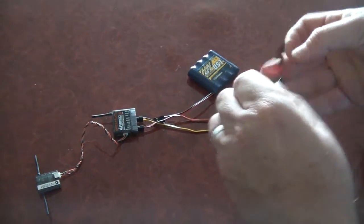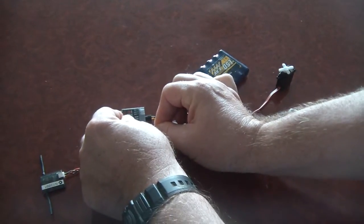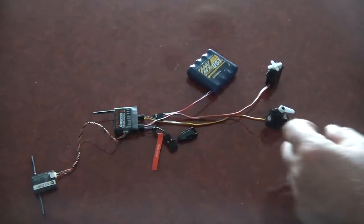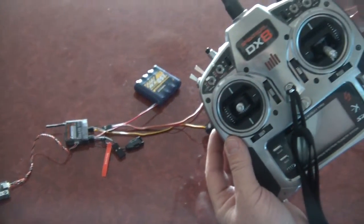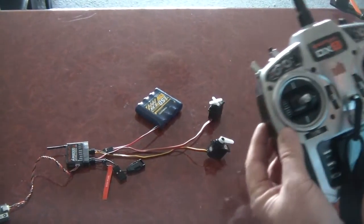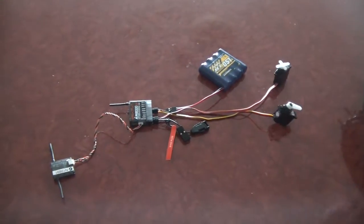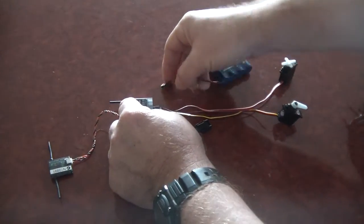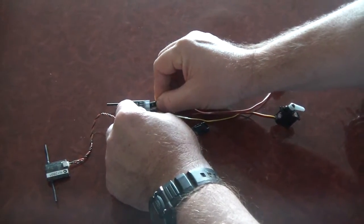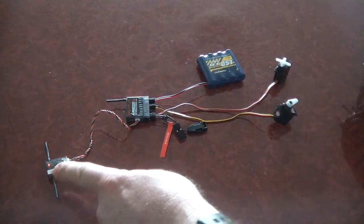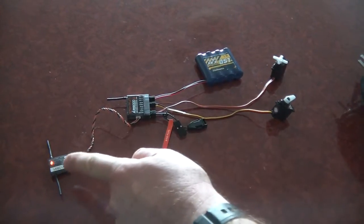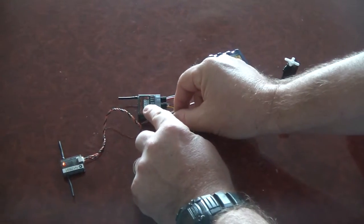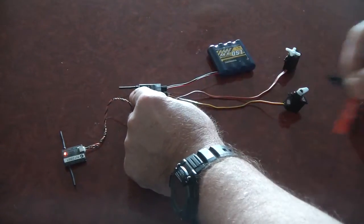Plug in the bind plug. This time I'm going to have the gear channel in the center position, so that'll be the failsafe position. Everything's off and the throttle is obviously at idle. We'll plug in the power. Okay, we've got the two lights indicating the receiver is in bind mode. What we'll do now is just remove the bind plug.